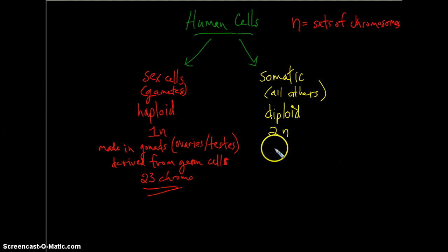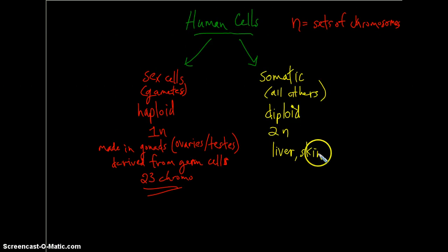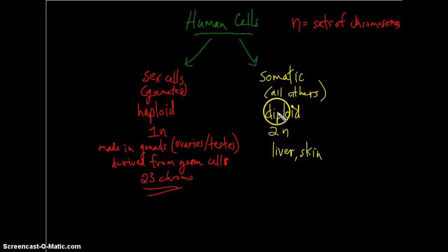And these are the more common body cells. You can think of cells in the liver, the skin, cardiac muscle, skeletal muscle. They'll all be nucleated cells and be referred to as diploid or somatic cells.